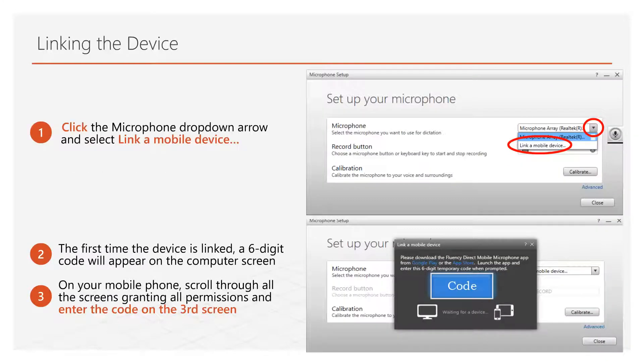Click the microphone drop-down and select Link a Mobile Device. Note that this is a one-time process for each mobile device. If you switch mobile devices, you will need to go through the linking process again for each device.